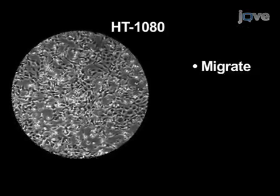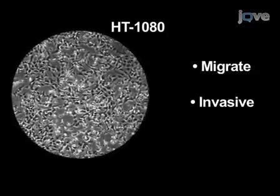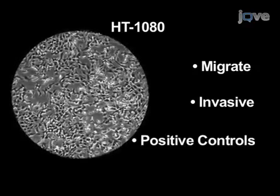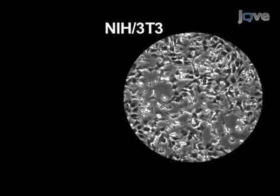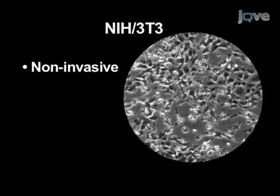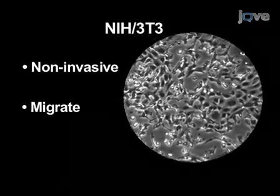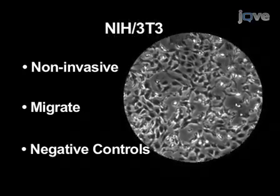HT1080 cells are proven to migrate and invade the matrigel barrier in the system and hence serve as good positive controls for the assay. NIH 3T3 cells are not invasive but do migrate and hence serve as good negative controls for this procedure.